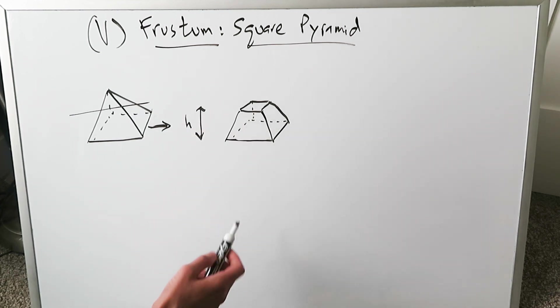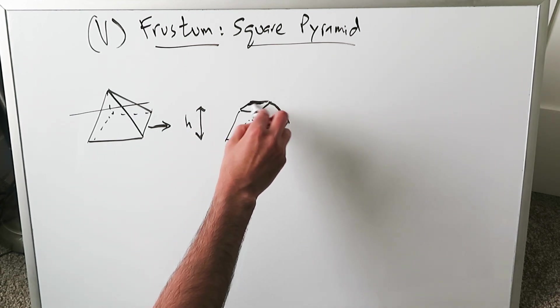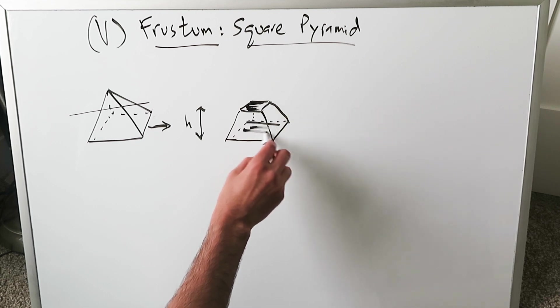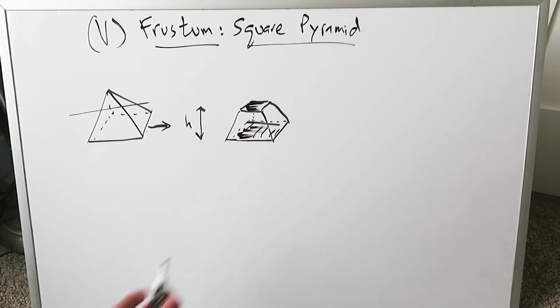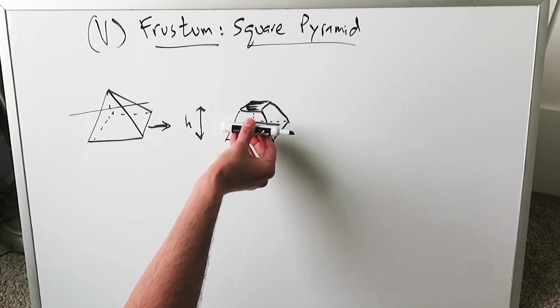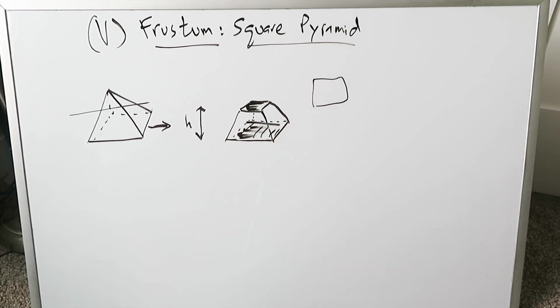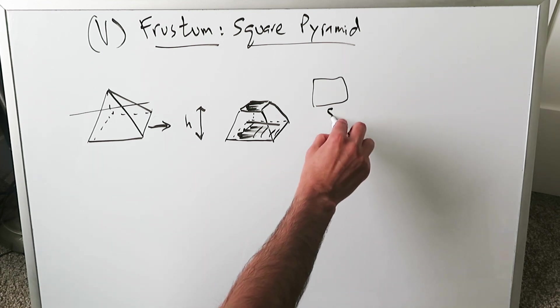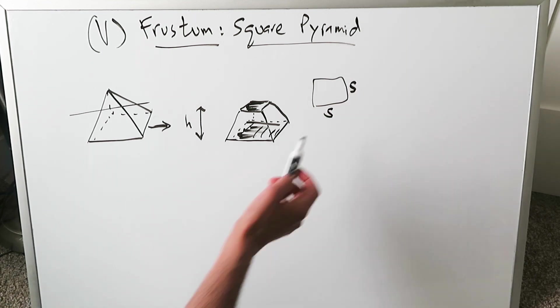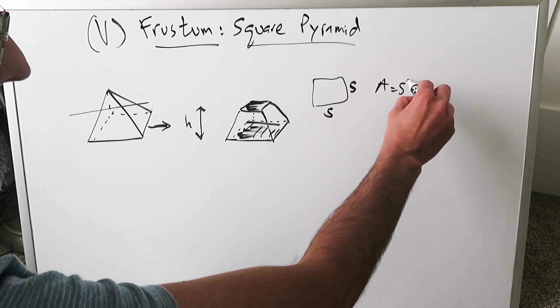There's a certain height you can see over here. There's an upper base which would have a certain area, and a lower base, obviously larger, with its own area. Any cross-sectional slice will be square. There is no rotation involved. We're looking at a square with a certain side S. The area is equal to S squared.